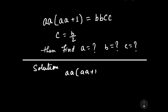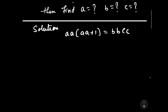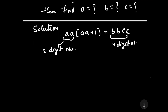Our question is a into a plus 1 is equal to bbcc. If you observe this question, we can clearly say that bbcc is a four-digit number, since a, b, c are unit digit numbers. We can also note that bb is a two-digit repeating number.